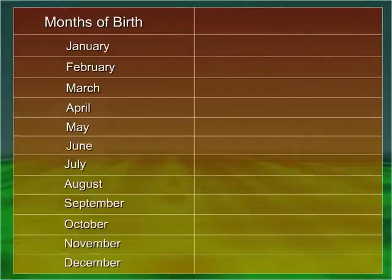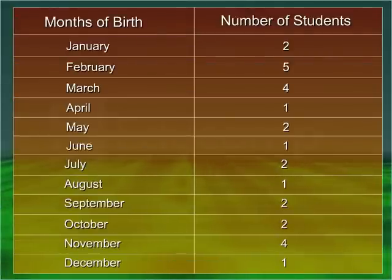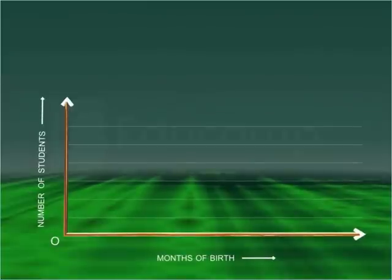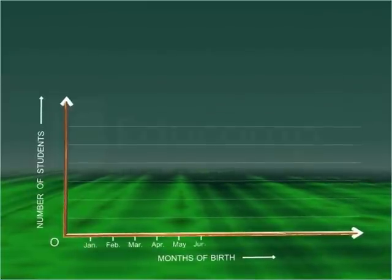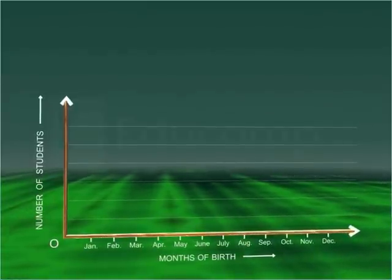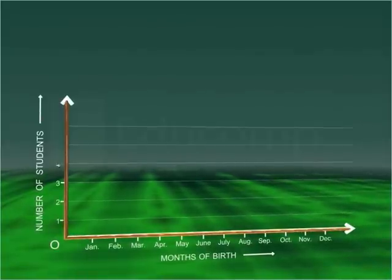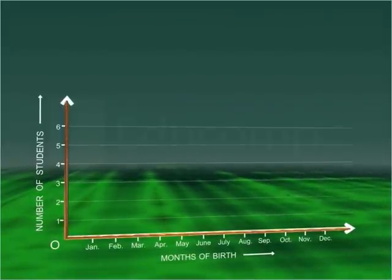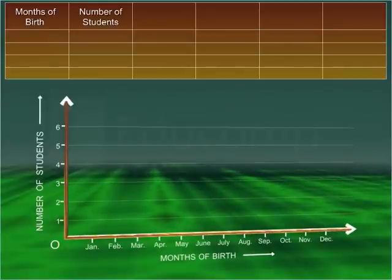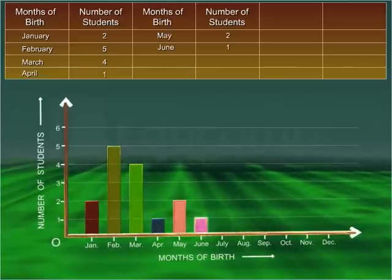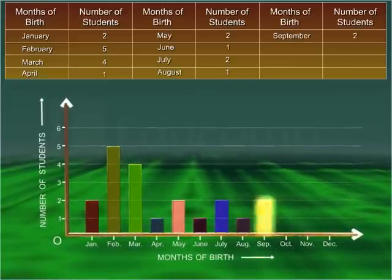Let's look at an example to understand better. The birth months of 27 students of a class are given in tabular form. To represent this data using a bar graph, represent the different months on the horizontal axis and the frequency — that is, the number of students — along the vertical axis. Then draw different bars corresponding to each month such that the height of each bar is equal to the corresponding frequency of each month.